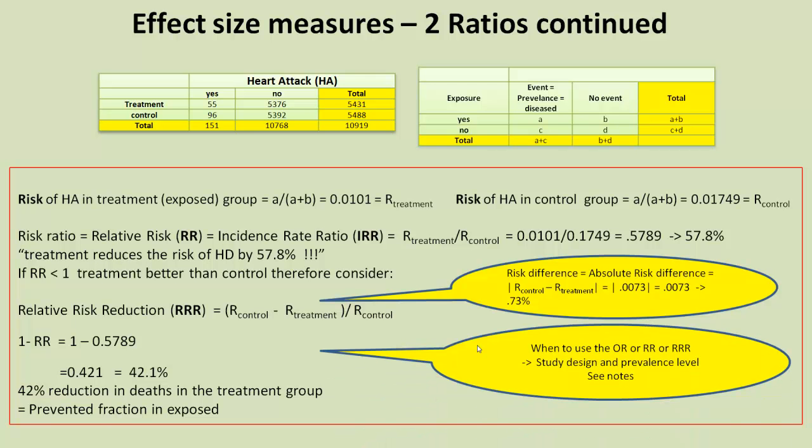The question is, which value do you use? Do you use the odds ratio or the relative risk or the relative risk reduction? And there's a large amount of literature concerning this. Most people say you should always use the odds ratio. And dependent upon the study design and the prevalence level, you can then think about using the relative risk or the relative risk reduction. You do need to look at literature, my notes, to find out exactly when to use each of these.